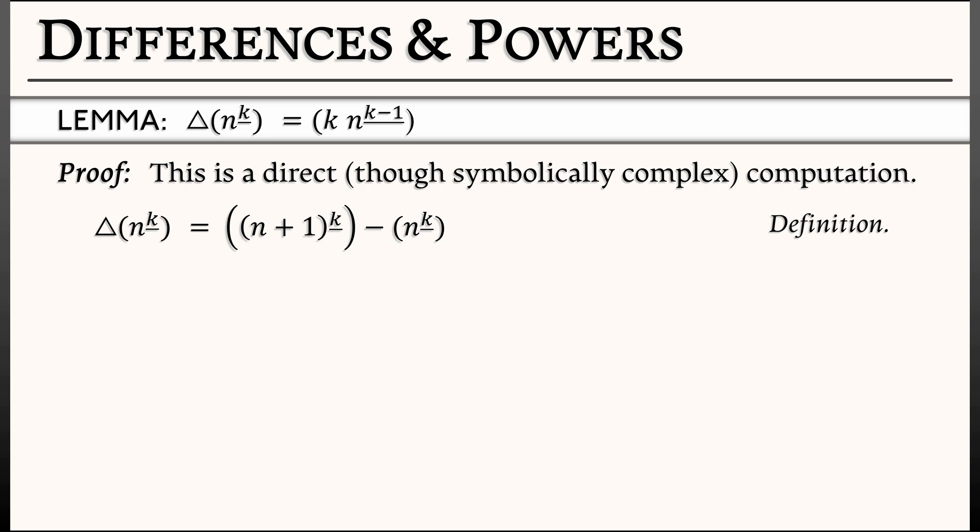Now we're going to use the definition of falling powers. n plus 1 to the falling k is n plus 1 factorial divided by n plus 1 minus k factorial. And n to the falling k is n factorial divided by n minus k factorial. I'm going to look at the difference between those two.